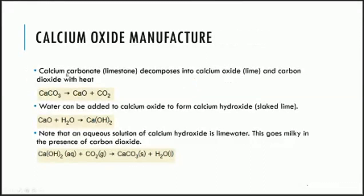Moving on to carbonates — a lot of this is focused on calcium oxide. Let's get some terminology set first. Calcium carbonate, another word for that is limestone. Don't get confused if they use limestone in an exam because it simply means calcium carbonate. Now calcium carbonate or limestone decomposes into calcium oxide, which is lime — we've actually seen this reaction before, and it produces carbon dioxide in the process. Calcium carbonate thermally decomposes to form calcium oxide and carbon dioxide. Another word for calcium oxide is lime — if they use lime in an examination, interpret that as calcium oxide.